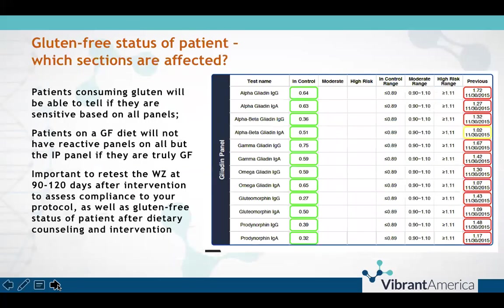There are a few important things to notice before running a Wheat Zoomer. Patients and providers commonly ask if the gluten-free status of the patient affects the test results, and it does. If the patient is 100% gluten-free at the time of the blood draw, they will have little to no elevated antibody response to the peptides tested. You can ask the patient to reintroduce small servings of gluten-containing foods for about seven to ten days prior to the blood draw, or you can draw the test anyway, realizing that most individuals who think they are gluten-free are probably not completely eliminating gluten and will still have some mild antibody response. The intestinal permeability panel will be reactive independent of gluten consumption and is not affected by the gluten-free status of the patient.